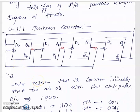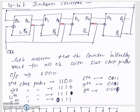This type of feedback produces a unique sequence of states. The number of states counted by the Johnson counter is 2n, where n is the number of bits. In this example with 4 bits, the counter sequences through 2 × 4 = 8 different states, counting from 0 to 7.